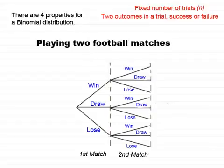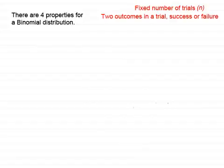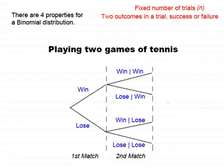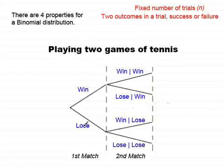Let's look at playing two games of tennis. I've got a fixed number of trials — two trials, my first match and my second match. I've also got two outcomes in a trial, success or failure, because in any match I can either win or lose. Now, what is the third property for a binomial distribution?